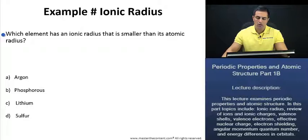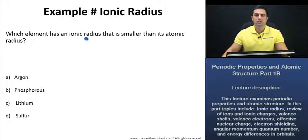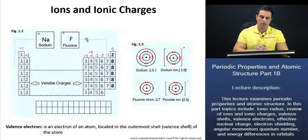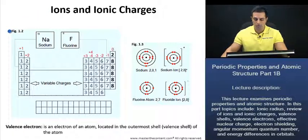Example: Ionic Radius. Which element has an ionic radius that is smaller than its atomic radius? To really understand this question, we first need to figure out what an ionic radius is. In order to do so, it's a good idea to look at valence shells, valence electrons, and various trends on the periodic table. We'll talk about ions and ionic charges as well. So let's do that first and then come back to our question, looking at figure 1.2.